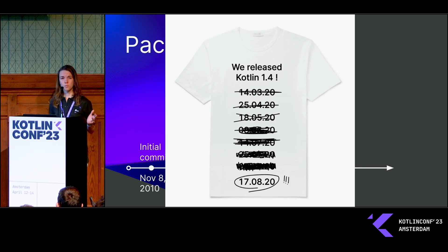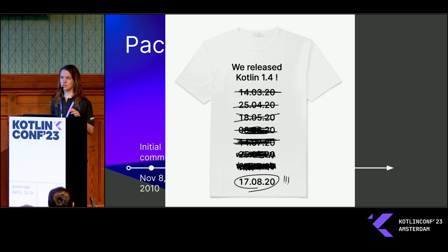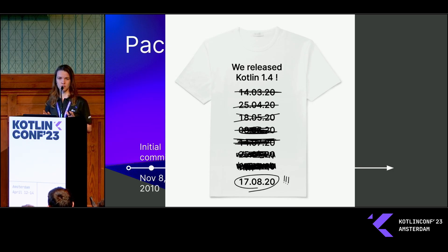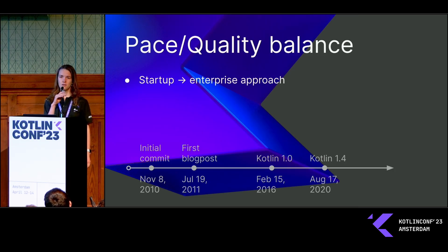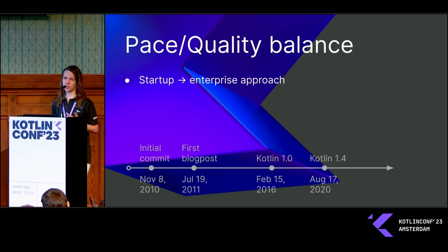What is so special about Kotlin 1.4? We created t-shirts when we finally released it. The truth about this t-shirt is that the first and last dates are real — we had a delay of almost half a year. Because we were not a startup anymore, we had to streamline our processes to be more predictable for our users.